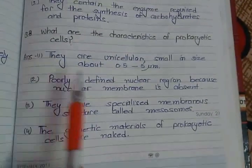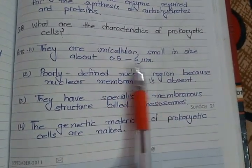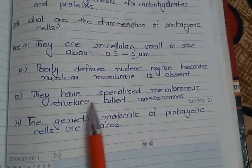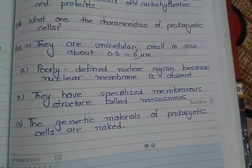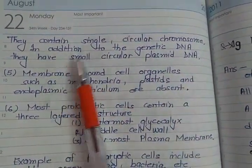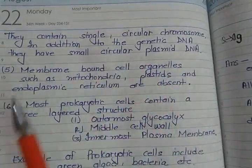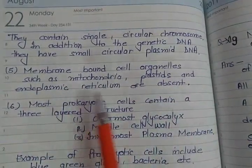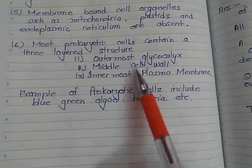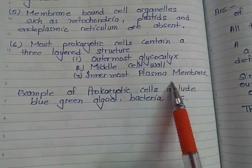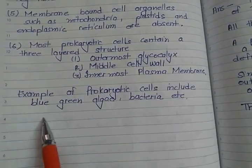Question 8: What are the characteristics of prokaryotic cells? Size is small — about 0.5 to 5 micrometers. They have a specialized membranous structure called mesosomes. The genetic material is naked; they contain a single circular chromosome and also have circular plasmid DNA. Membrane-bound organelles such as mitochondria, plastids, and endoplasmic reticulum are absent. Most prokaryotic cells have a three-layered structure: outer glycocalyx, middle cell wall, and innermost plasma membrane, forming a protective layer. Examples include blue-green algae and bacteria.